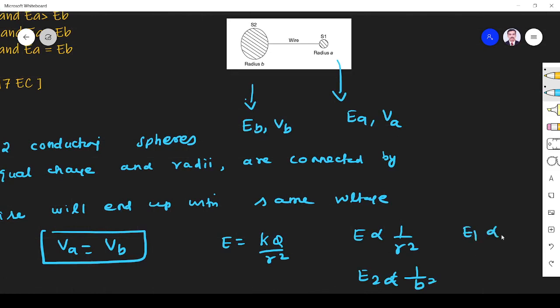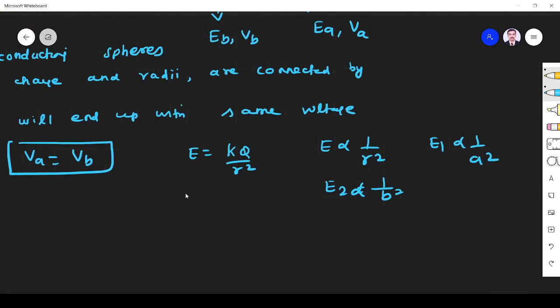Similarly for S1, electric field is 1 by A square. It is given that B is greater than A. This means what? This is E2, 1 by B square, this is E1, 1 by A square. B is greater than A means E2 must be less than E1.